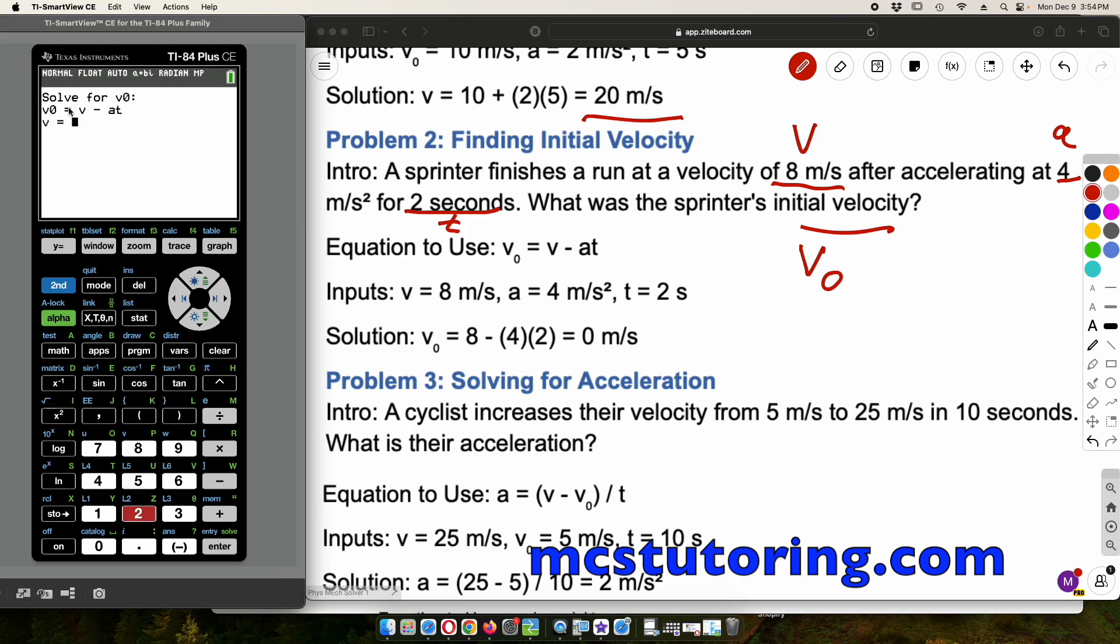And notice how the program rearranges the formula for you. So we've got V sub 0 equals V minus AT. Now we're just going to plug in the information we have. And that's why I like labeling everything, annotating it, if you like. So we're going to say V is 8, and then A is 4, and then the time is 2 for 2 seconds. And then, okay, velocity initial is 0.